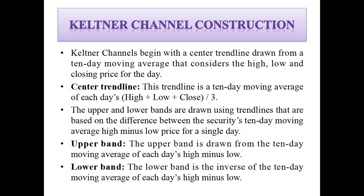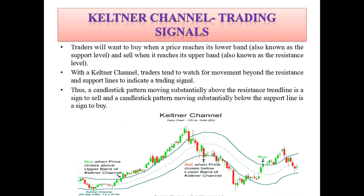When Keltner Channel is applied as a strategy and shown on the diagram, the center line acts as a resistance level and the lower band acts as a support level. When the stock crosses the upper line with a green candle, you can enter a buy position. If price crosses back below, or approaches the resistance level, you can consider a sell or exit. Monitor resistance and support crossovers to manage your trade.